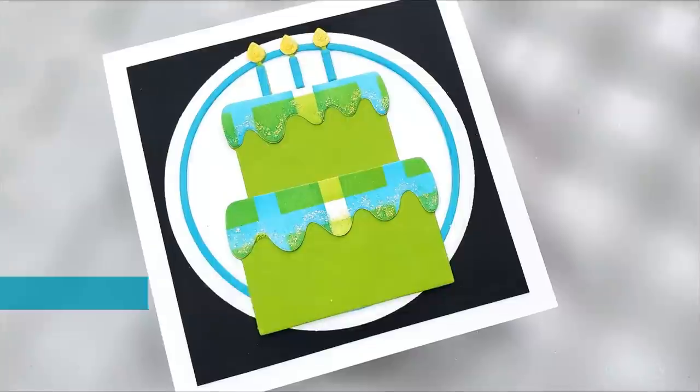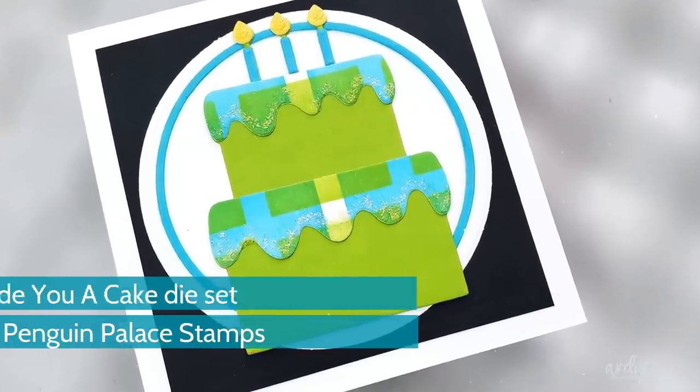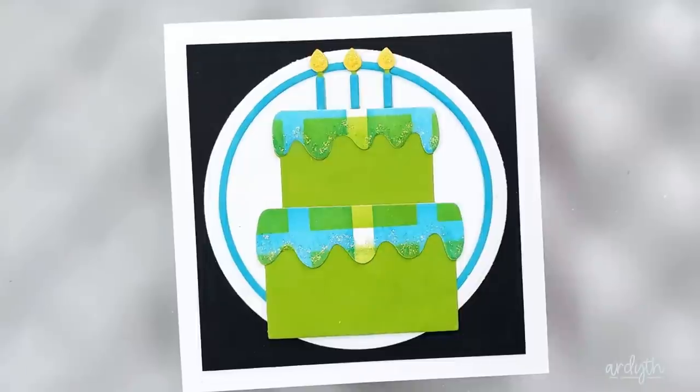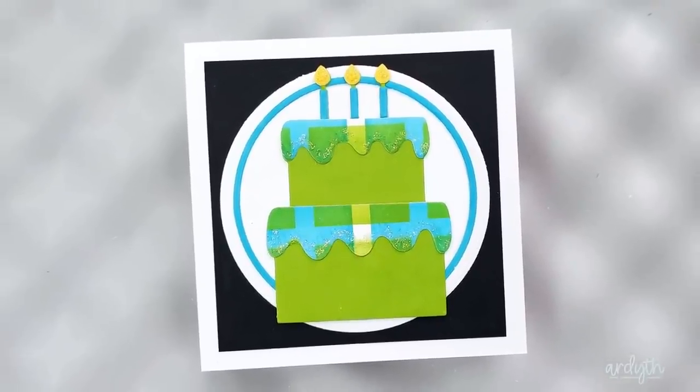For the second card I used the I made you a cake die set from Penguin Palace Stamps and I used the plaid circle to cut my icing for the cake. I added some stickles along the frosting edges and on the candle flames for a bit of sparkle.